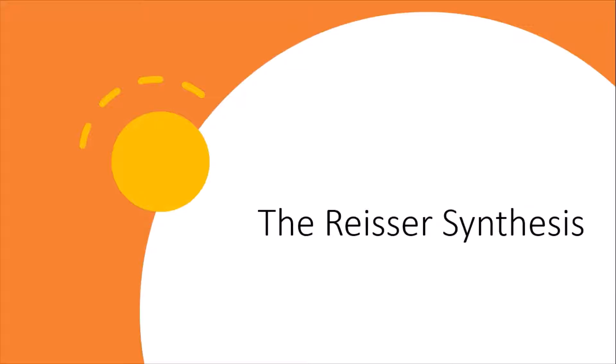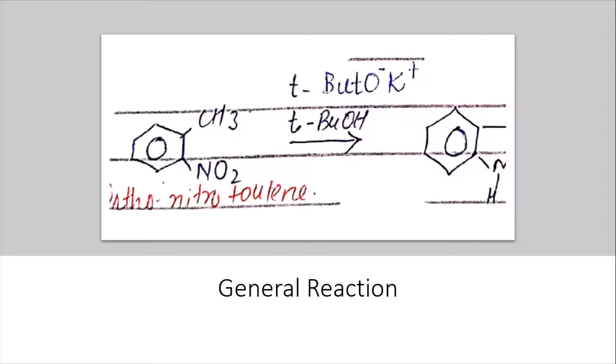Today we will talk about the Reissert synthesis of indole. This is its general mechanism. In this reaction, ortho-nitrotoluene is attacked by tributoxy and tributanol.